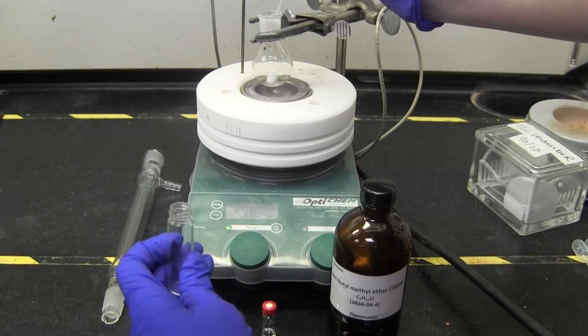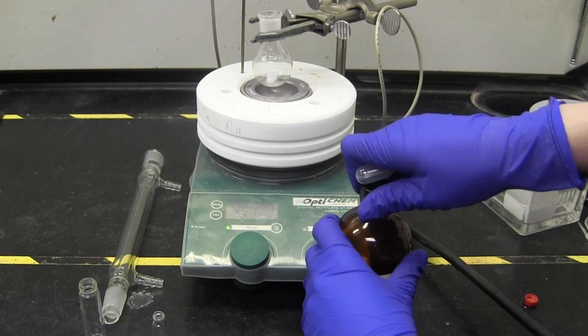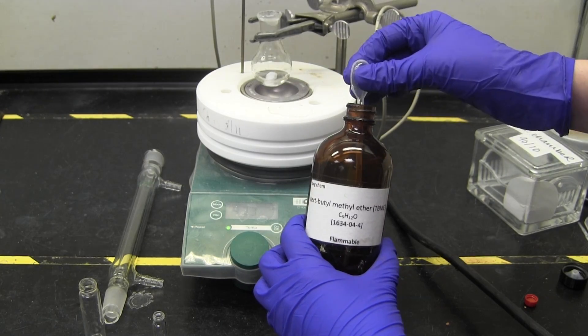To start the reaction, you will combine the designated amount of your substrate. Remember to save out one drop of your alcohol for TLC tests. Add the acyl donor, solvent, and a magnetic stir bar in a round bottom flask.